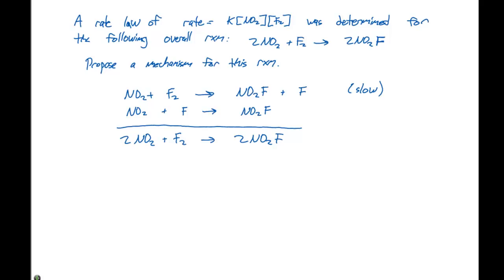We have two NO2Fs on the product side. Fluorine is an intermediate that cancels out, and we have two NO2s and an F2 on the reactant side. This gives us our overall balanced reaction, and we can say this is the proposed mechanism with F being an intermediate.